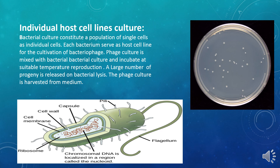Individual host cell lines culture: this is a bacterial culture in which a bacterial cell is used as a single host cell for cultivating bacteriophage virus, an example being E. coli. Bacterial cells are unicellular organisms comprising a single cell with individual identity, so they do not form tissue. Bacteriophage inoculation is carried out on this medium and culture, followed by incubation at a suitable temperature during which it proceeds with its reproduction cycle.